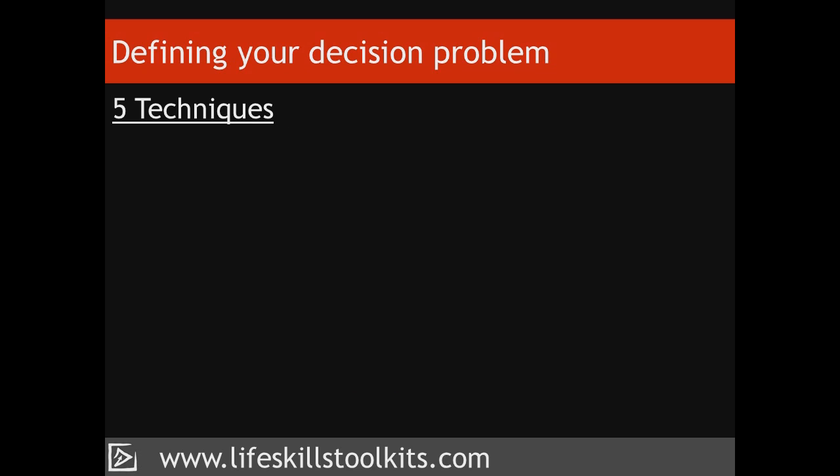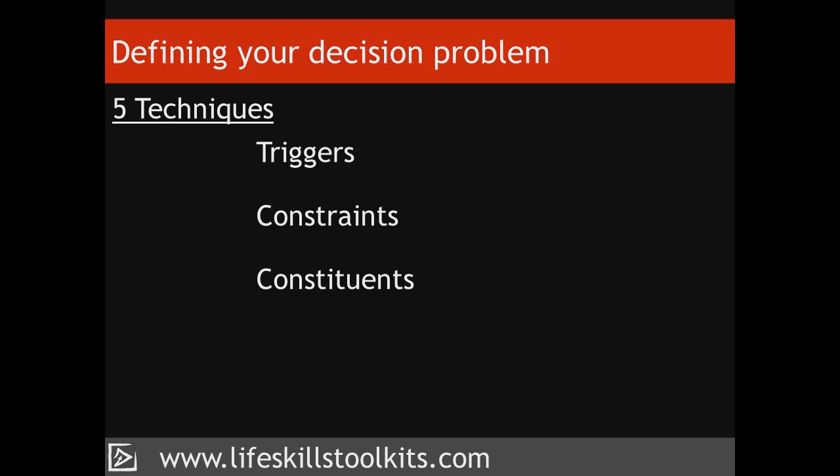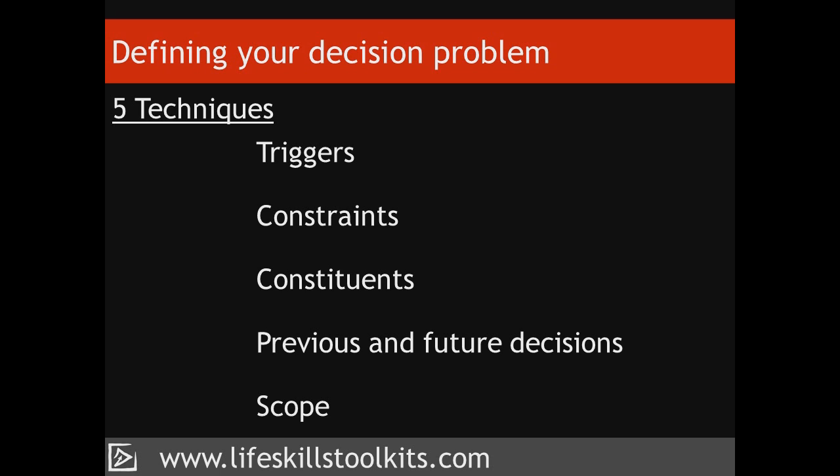There are five techniques that you can use to help you define your decision problem: understand what triggered it; identify any constraints; break down your situation into its constituent pieces; understand how your current problem is affected by previous decisions and how the decision you'll make will affect future ones; and decide whether the scope of your decision is either too broad or too narrow.